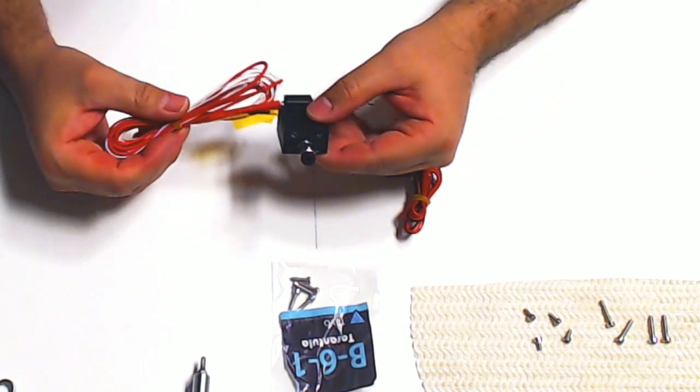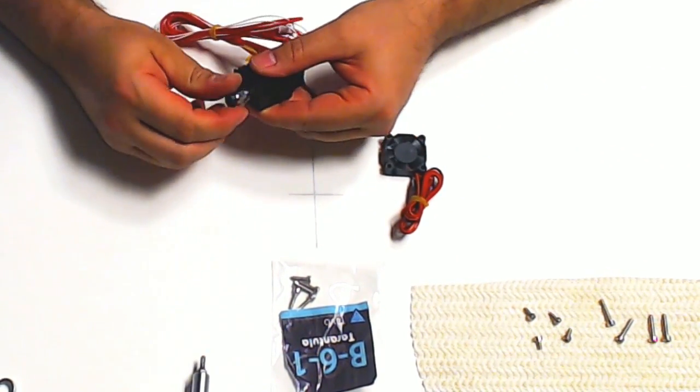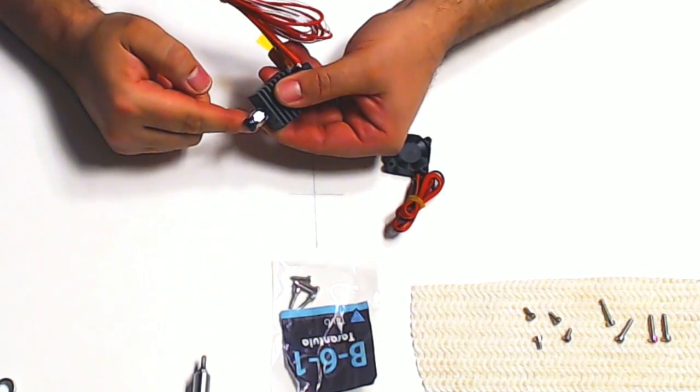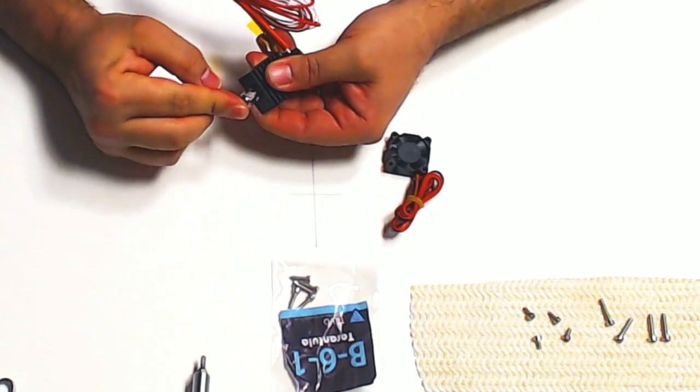The way it comes is just like this. One thing you want to do is make sure this is on tight. Mine was pretty loose and about to fall off when I got it. So just tighten this up, make sure it's in there tight.